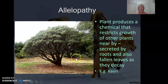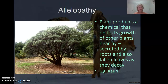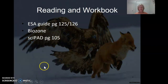Another example would be so-called allelopathy. That's a special case of amensalism where a plant produces a chemical that restricts the growth of other plants nearby. It's very common — cacao trees in New Zealand commonly show this kind of behaviour. This is where plants either release a chemical from their roots or they have chemicals in their leaves and their decaying leaves that inhibit the growth of other plants in their vicinity. And here are the readings for that.